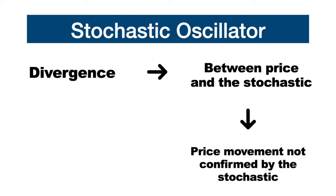Another very effective method to use the stochastic is by analyzing the divergence between the price and the oscillator. A divergence is simply a price movement that is not confirmed by the stochastic, indicating a potential reversal.